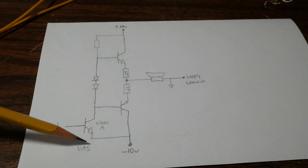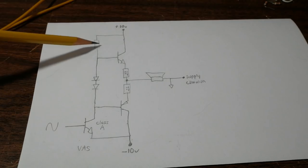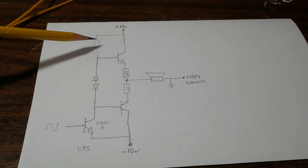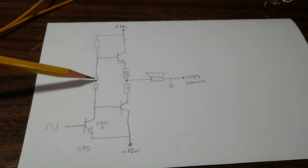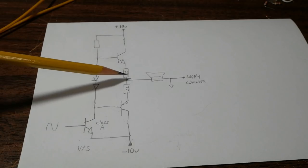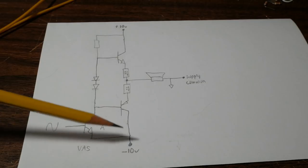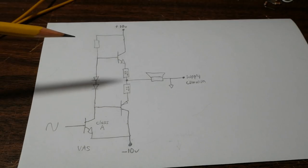And the class A stage has a resistor up here. We'll just call this a current source for now. These two diodes are used for biasing the output stage. It keeps the stage slightly turned on so we can avoid crossover distortion.